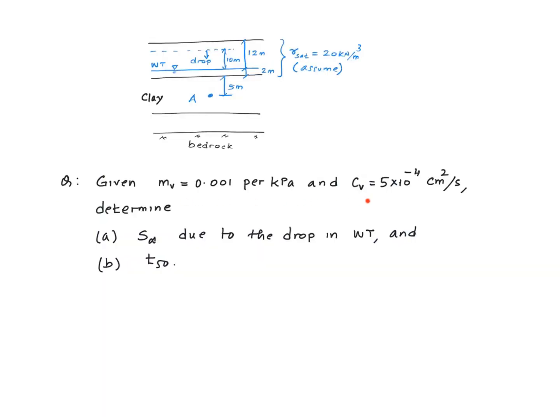Say these are the properties of the clay layer. Coefficient of volume change is 0.001 per kilopascal. And the coefficient of consolidation is 5 times 10 to the minus 4 centimeters squared per second. We want to calculate the ultimate settlement of the ground surface due to the drop in water table by 10 meters. And the time that it would take for 50% of the consolidation to take place, little t 50.